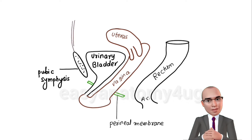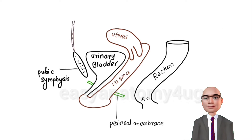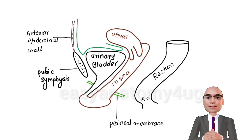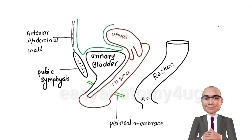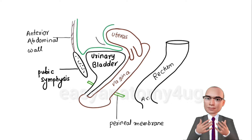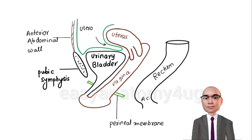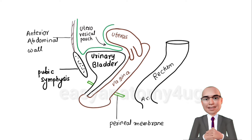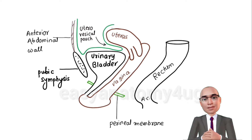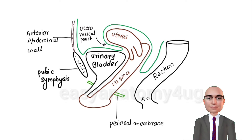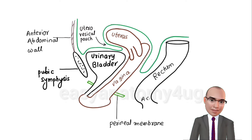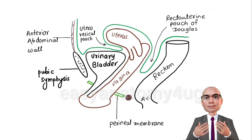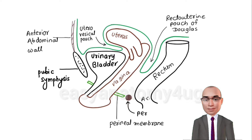Now we will draw the anterior abdominal wall, then we will start drawing the peritoneum. In between the uterus and the urinary bladder, there is a peritoneal fold called the utero-vesicle pouch; it is also a false support of the uterus. We will continue behind — in between the uterus and rectum there is the recto-uterine pouch of Douglas. In between the vagina and anal canal, show the fibromuscular node, the perineal body.